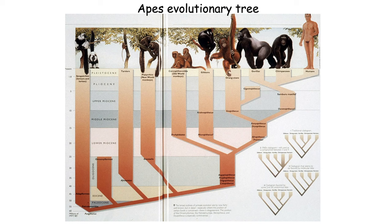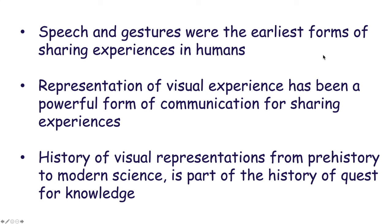This shows a fairly basic understanding of the evolution of mammals, with us in good company with chimpanzees and gorillas. We separated from them only a few millions years ago, and how this happened has been complicated — researchers are increasingly understanding the complexity of how this happened from the very beginning in Africa. Speech and gestures were the earliest forms of sharing experiences in humans. Representation of visual experiences has been a powerful form of communication, and the history of visual representation, from prehistory to modern science, is part of a history of a quest for knowledge.